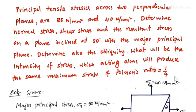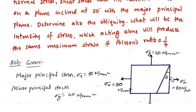In this question, at a point in a strained material, two stresses are given in two perpendicular directions. Taking x and y directions, the major stress is 80 N/mm² in the x-direction and the minor stress is 40 N/mm² in the y-direction. We need to find normal and shear stresses on an oblique plane making an angle of 20 degrees with the major principal plane.